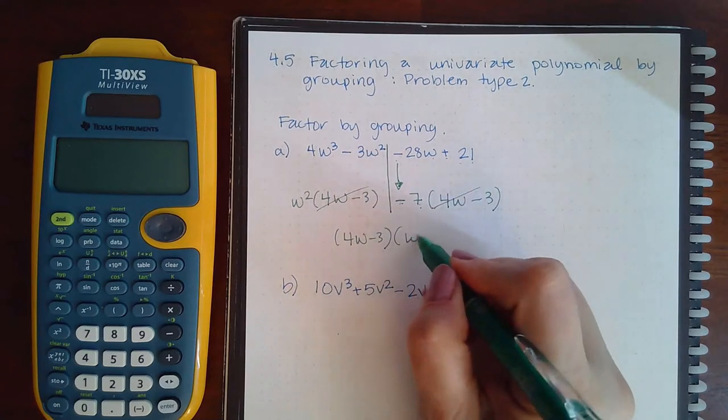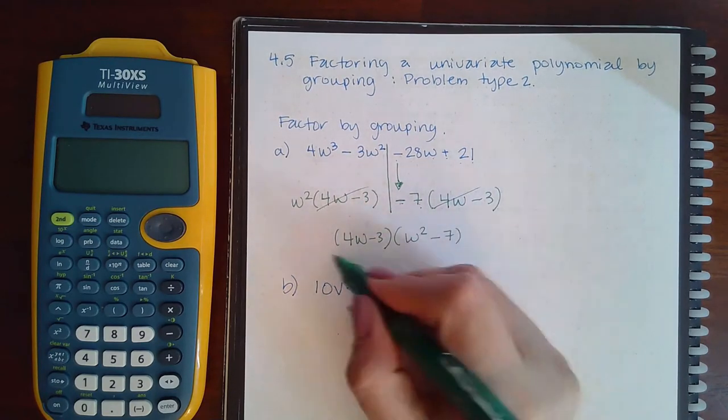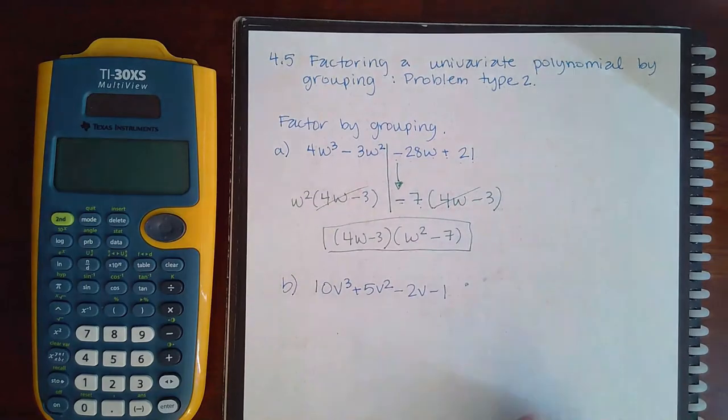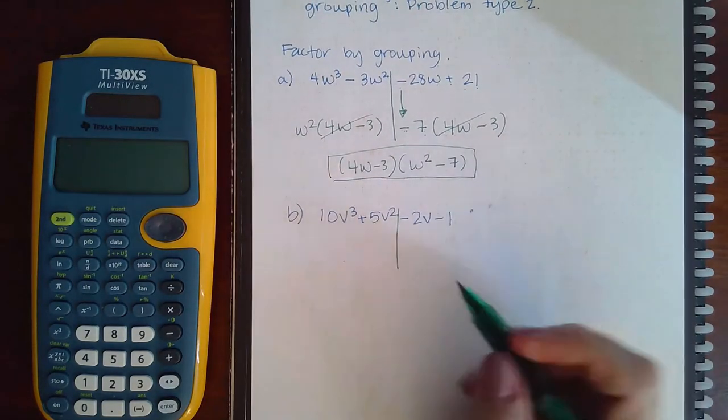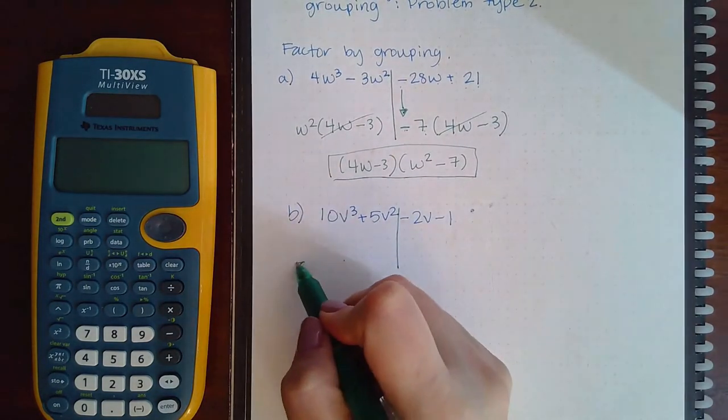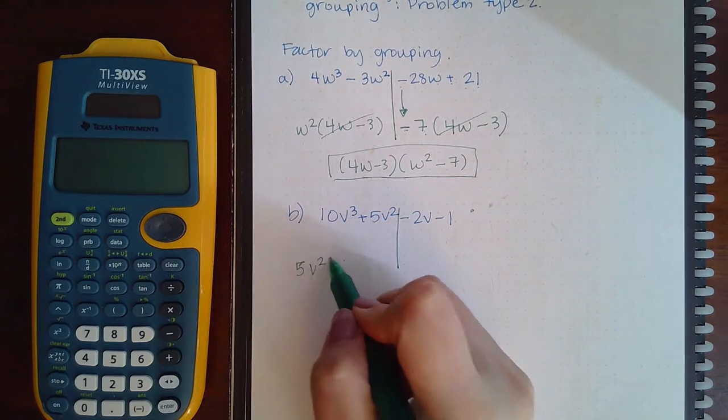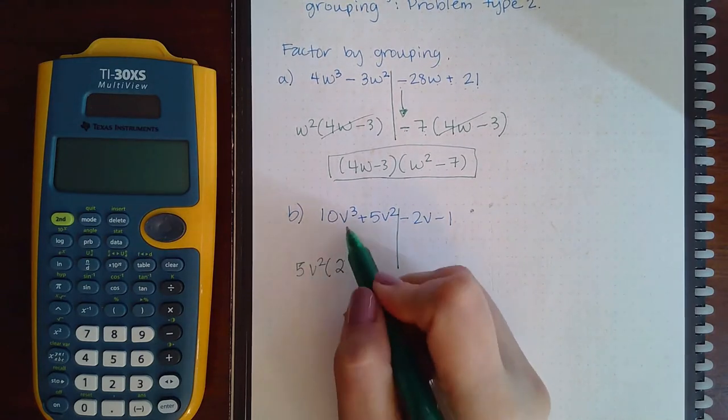Here if I chop these in half, these guys have a 5 and a v squared in common. So then I will be left with 10 divided by 5 is 2, take out 2 v's I'm left with 1, 5 divided by 5 is 1, and the v squareds are out so I'm left with that.